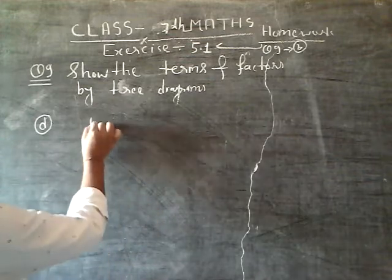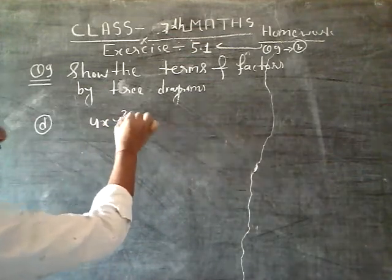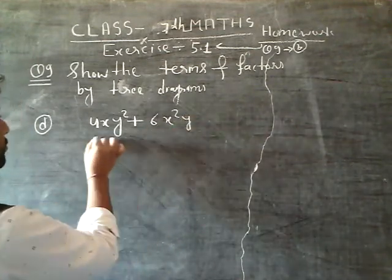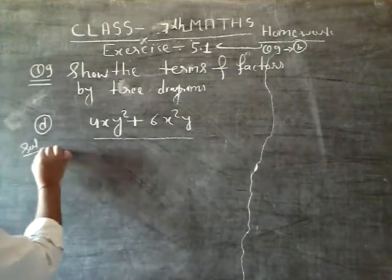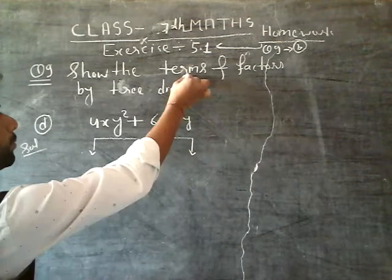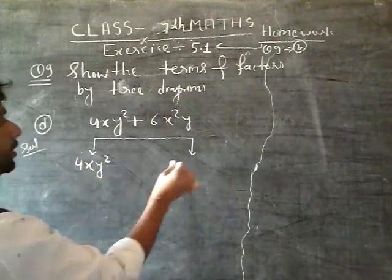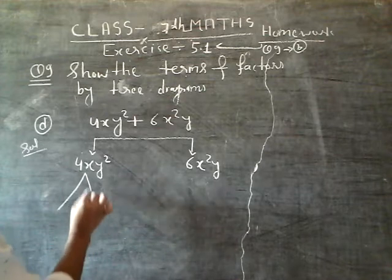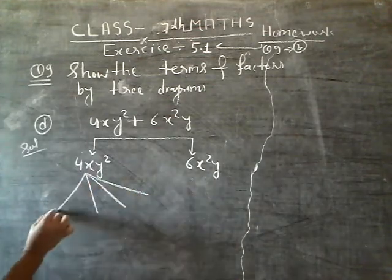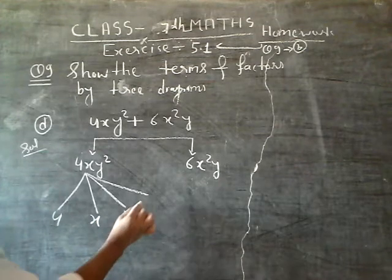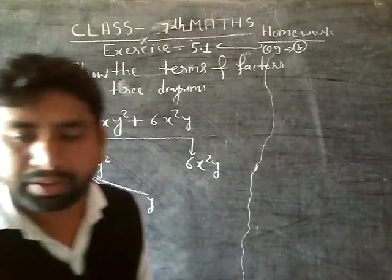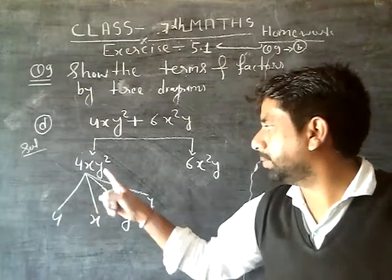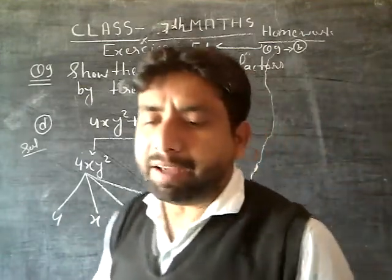D actually is 4XY square plus 6X square Y. When we solve this sir, 2 terms. Separate the terms: 4XY square and 6X square Y. Then you'll see the factors. 4XY will come. Nobody should have doubt about this. 4 constant term, X term, Y factors will be Y into Y.